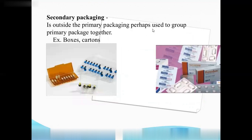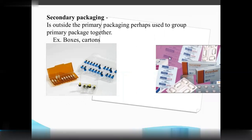Secondary packing contains the primary packing. For example, boxes and cartons — you can use tablets in a box, or a strip placed inside a box. So the strip is primary packing and the box is secondary packing.